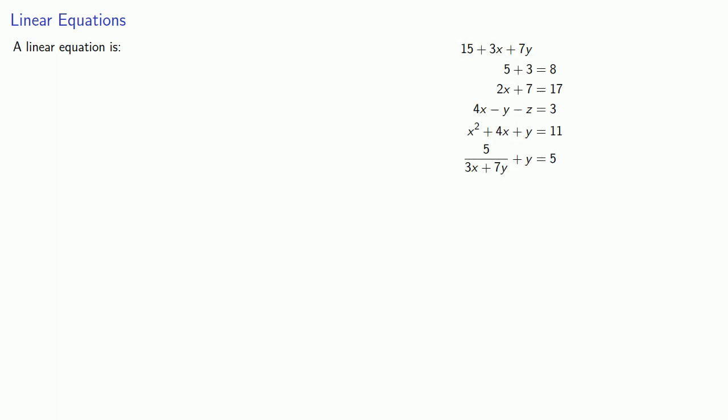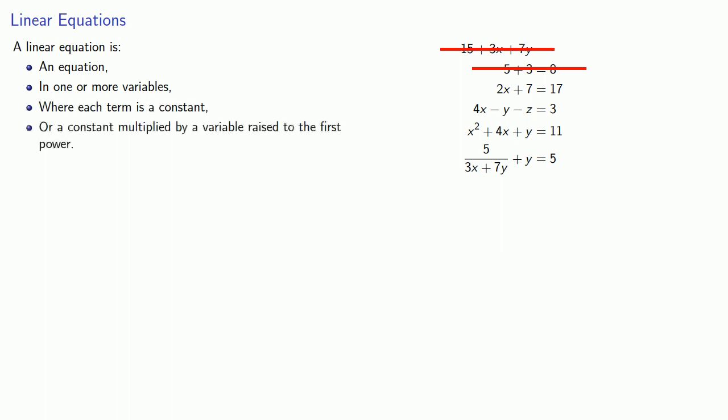A linear equation is first of all an equation, so we have to have an equal sign that lets this one out. We have to have one or more variables in the equation, so not this one. And finally the terms of our equation have to either be constants or a constant multiplied by a variable raised to the first power. So these are equations but they are not linear equations.